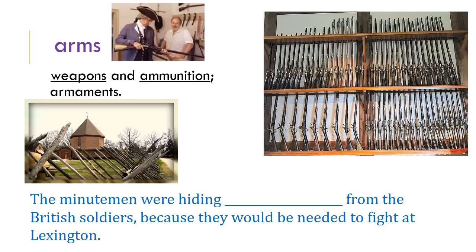The next word is arms. Arms is a synonym for weapons, ammunition, and armaments. Many words have multiple definitions, so look at a sentence to understand the context. Here we're talking about guns, ammunition, gunpowder, cannons — not arms on your body. The Minutemen were hiding arms from the British because they would be needed to fight at Lexington. Colonial towns had buildings called a magazine — another word with many meanings — where the militia kept their weapons to defend themselves from attack.